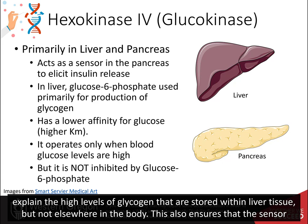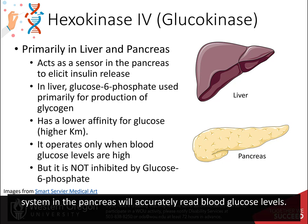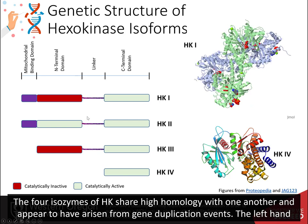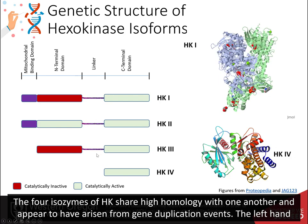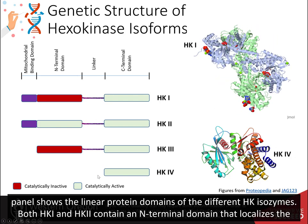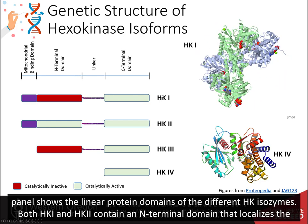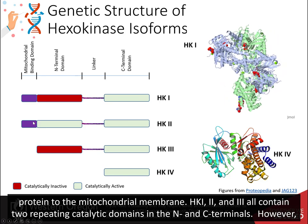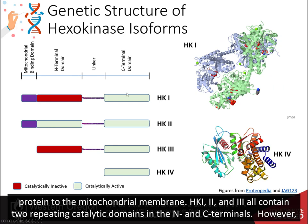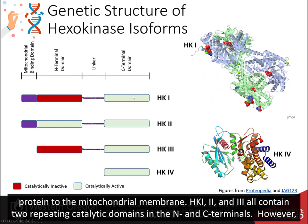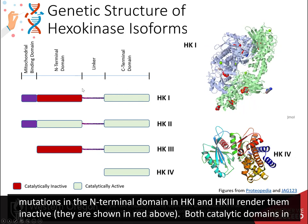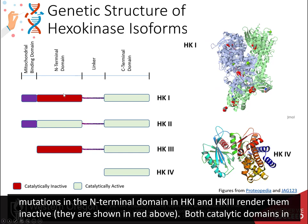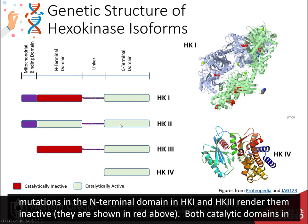The four isozymes of hexokinase share high homology with one another and appear to have arisen from gene duplication events. The left-hand panel shows the linear protein domains of the different hexokinase isozymes. Both HK1 and HK2 contain an N-terminal domain that localizes the protein to the mitochondrial membrane. HK1, 2, and 3 all contain two repeating catalytic domains in the N and C terminals. However, mutations in the N-terminal domain of HK1 and HK3 render them inactive, shown in red.